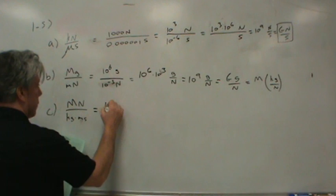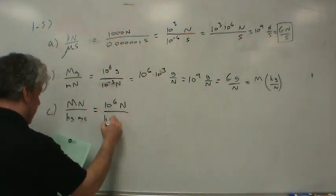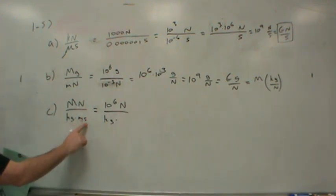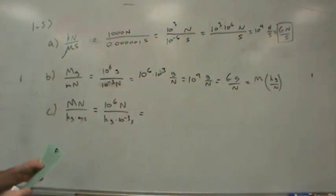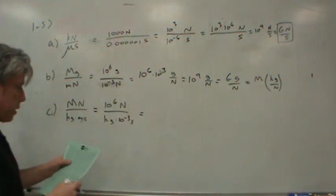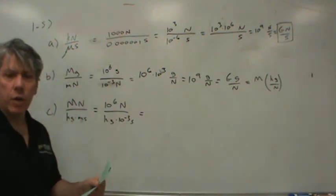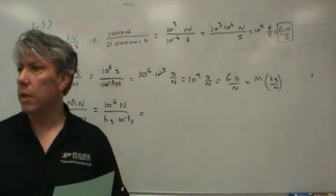Mega newtons, no big deal. Ten to the sixth newtons. Let's leave kilograms alone for the time being. And milliseconds would be ten to the negative third seconds. Notice all these have pretty much come out the same. We've got threes and sixes everywhere. Not really a surprise because pico and nano aren't very common.